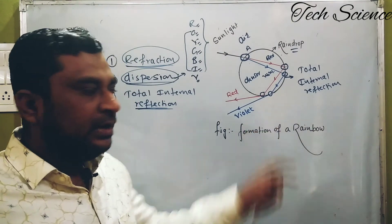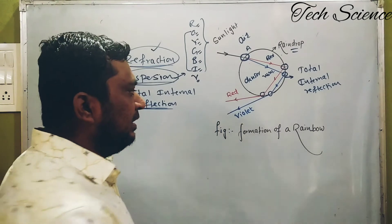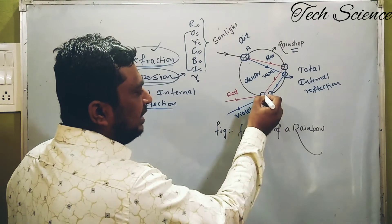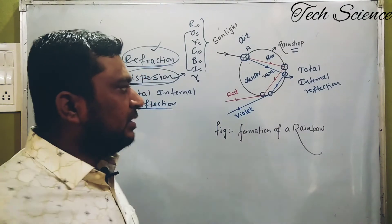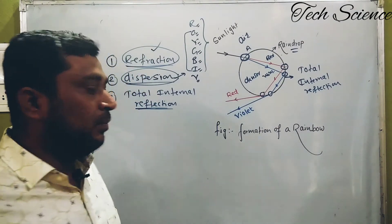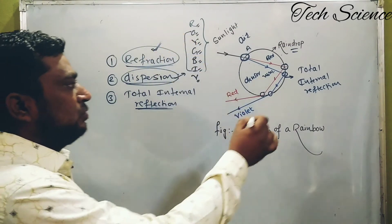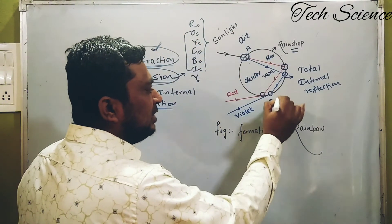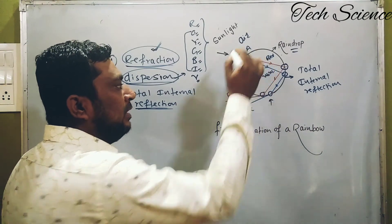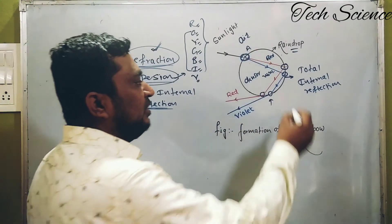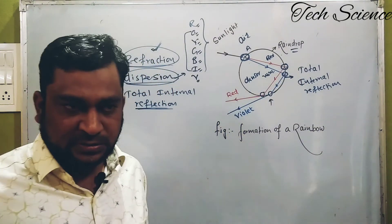The light comes to the next point and again refraction occurs. The light leaves this denser medium and comes into the air medium again. This is the phenomenon of rainbow formation: refraction occurs two times, dispersion occurs one time, and total internal reflection occurs one time.